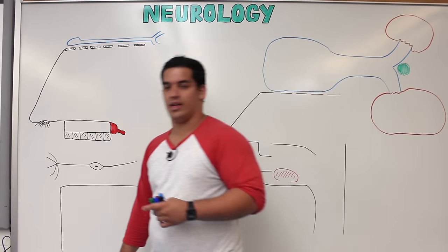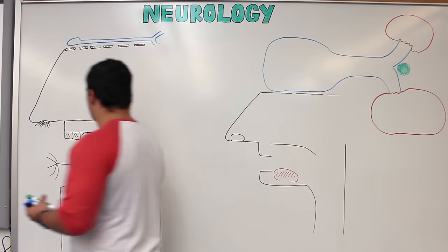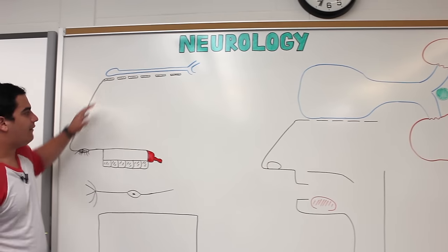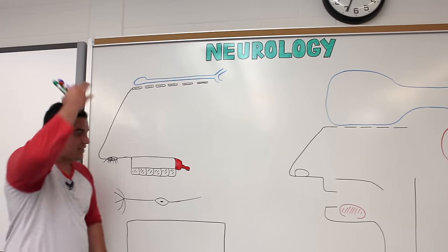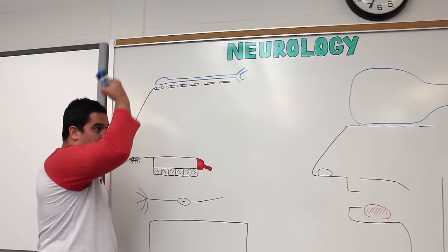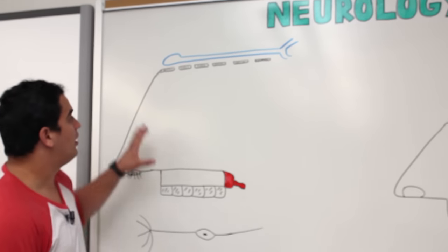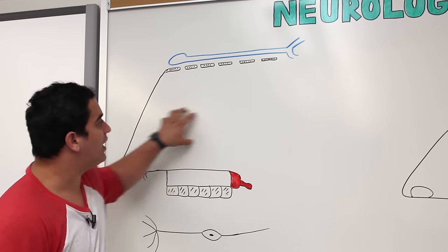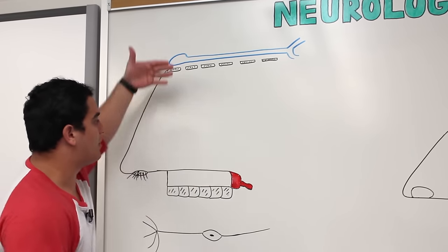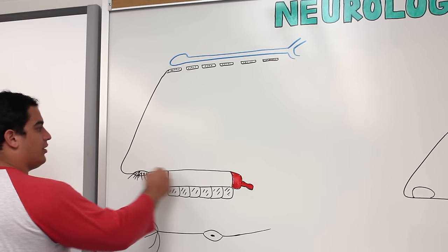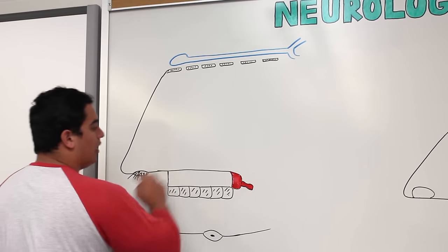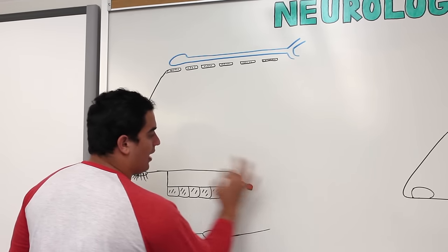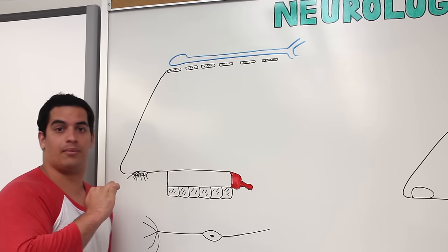We'll also talk about clinical correlations. Here we have a sagittal section of the nose — so we're looking at the nose from a sagittal view. This is the external nose (the honker), this is the hard palate, these are the teeth, this is the soft palate, and that's the uvula.